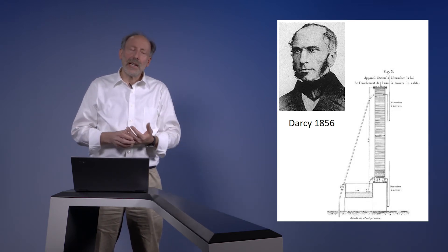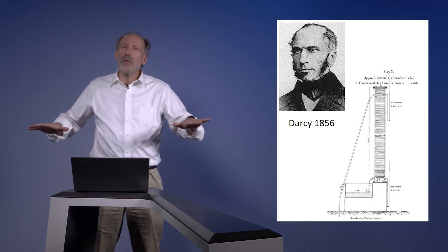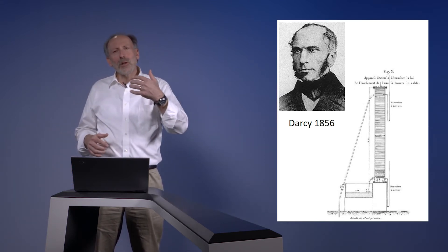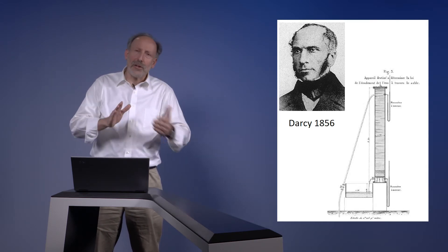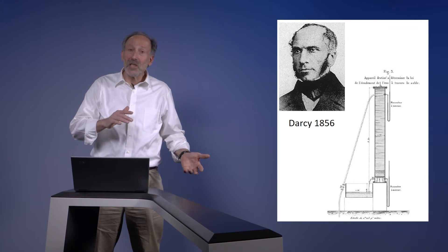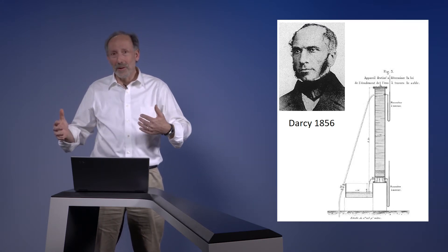Starting with Darcy in 1856, he was hired to understand exactly how water moved through the aquifers of Dijon and was able to show the remarkable fact that the flow of water was linear with a gradient in potential. This is quite different than if you're riding a bicycle where it goes with a square of your speed, the resistance.